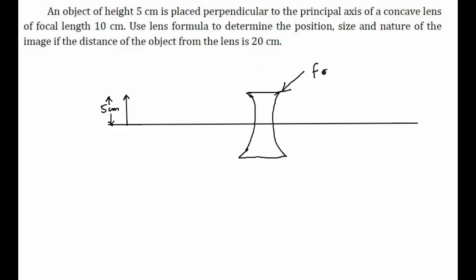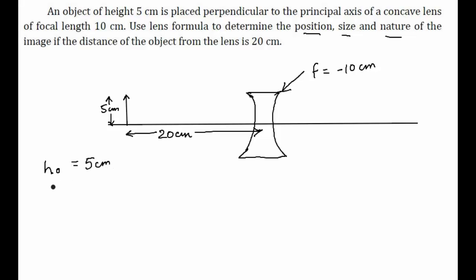The object height is 5 centimeters. The focal length is 10 centimeters, but since this is a concave lens, the focal length will be minus 10 centimeters. The distance of the object from the lens is 20 centimeters, so u equals minus 20 centimeters, since the object is on the left-hand side of the lens.